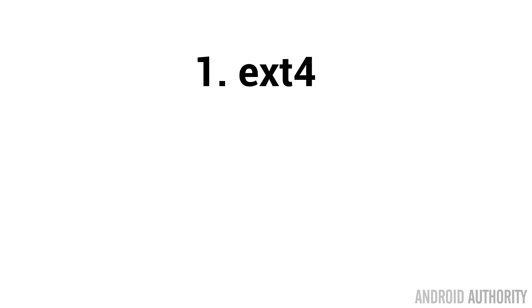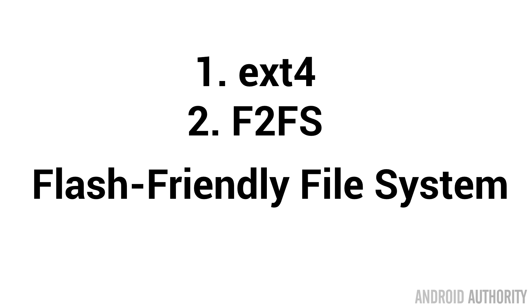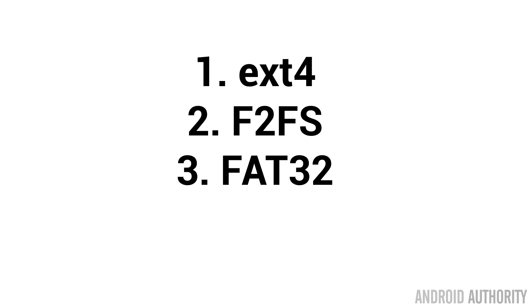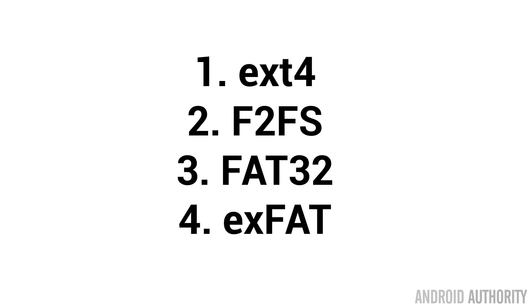On Android you're bound to come across about four different types of file systems — four different ways of organizing files onto the media. Android uses Linux, and the most popular file system for Linux is EXT4, so the majority of Android phones use EXT4 for their internal storage. There's also a file system used by Linux called F2FS — the Flash-Friendly File System — developed by Samsung, which takes into account some of the special characteristics of flash memory. If you're using an external micro SD card, it could be formatted using FAT32 or EXFAT depending on its size. So we've got EXT4, F2FS, FAT32, and EXFAT.